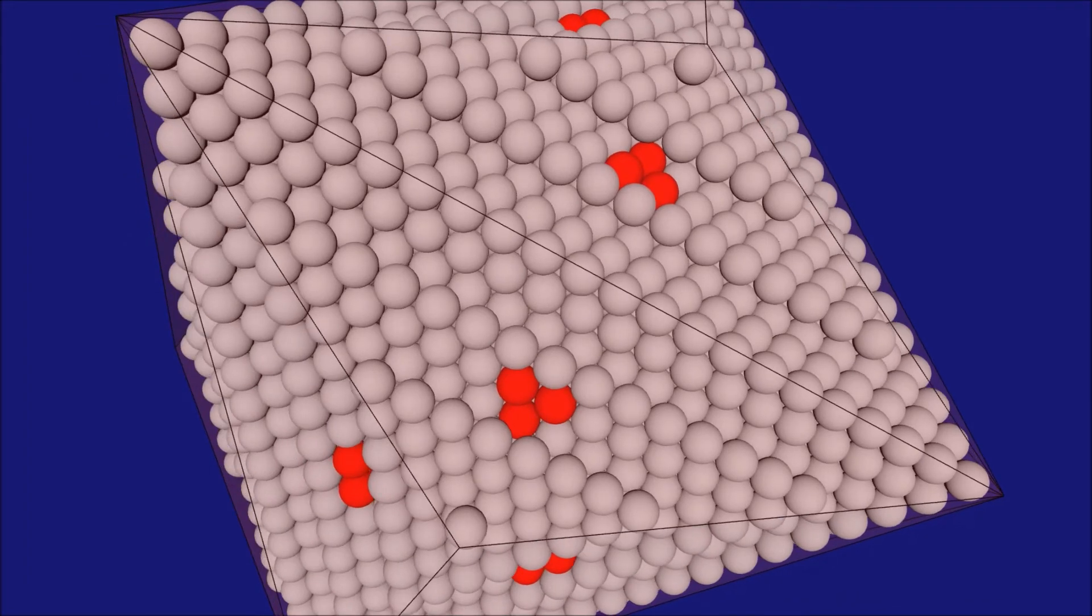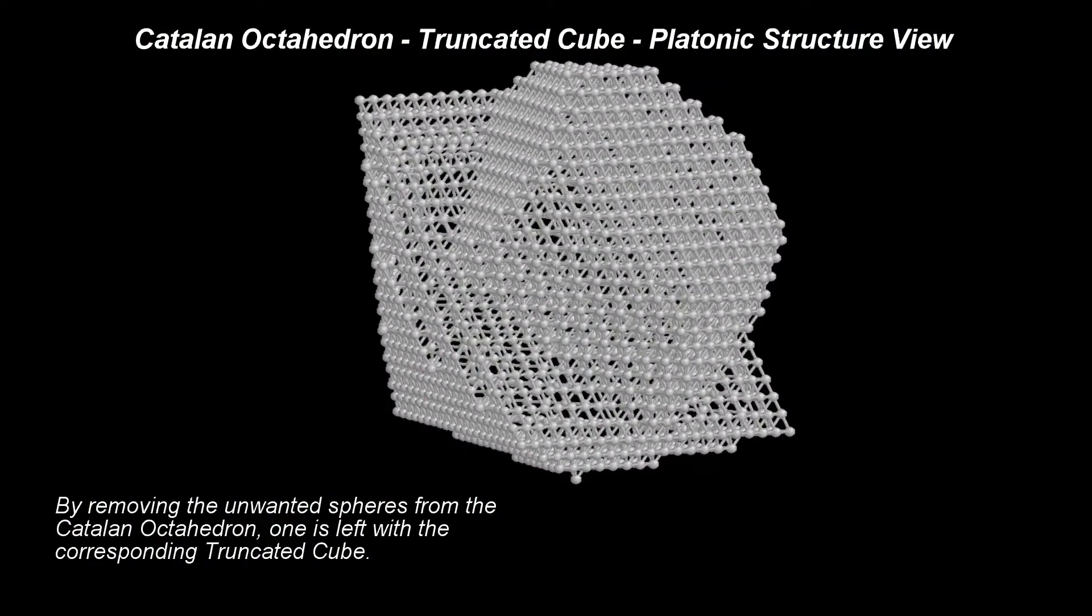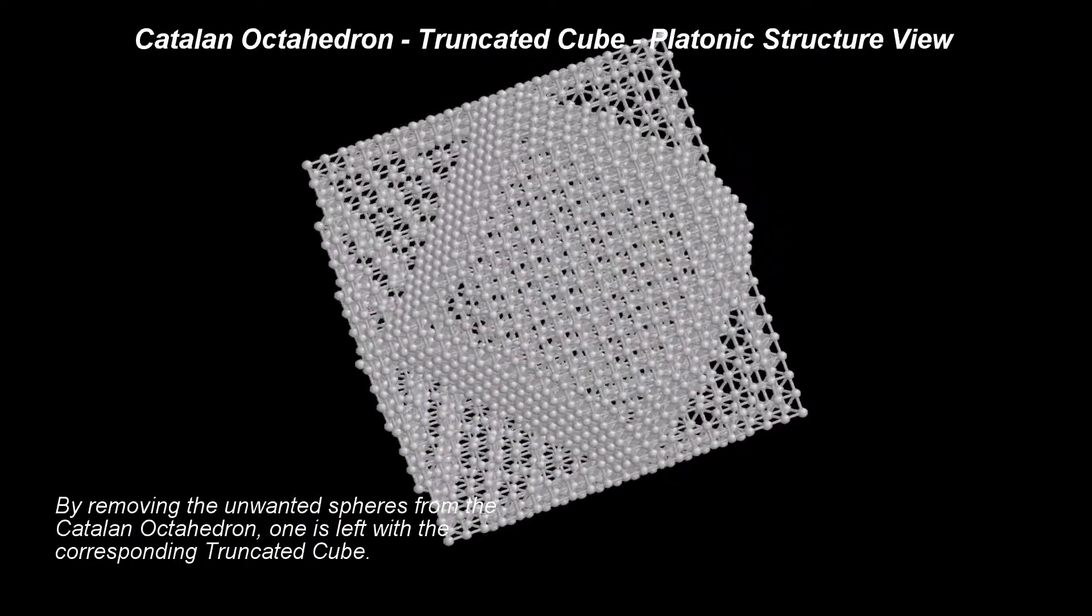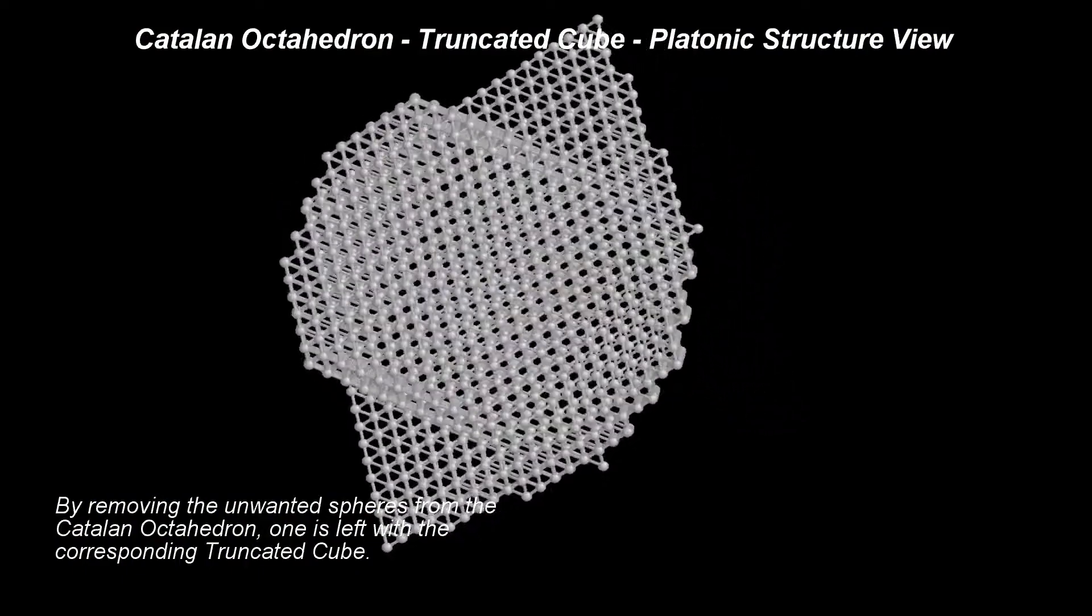As we can see, the center lays between the three red spheres. This tells us that a vertex of a perfect truncated cube is not defined by one sphere.